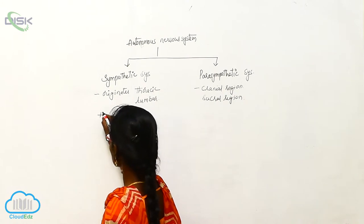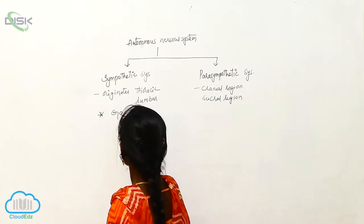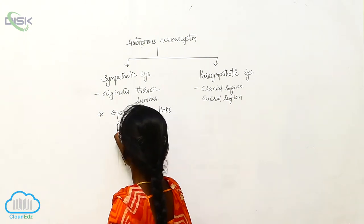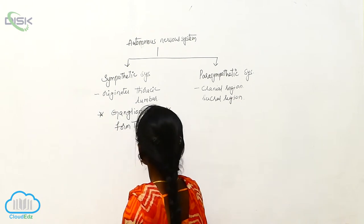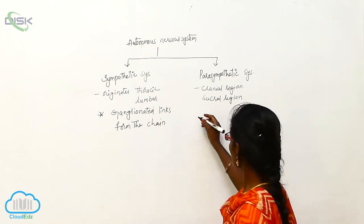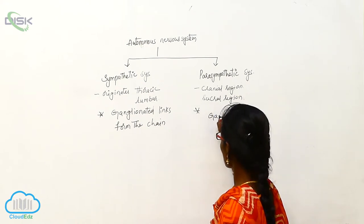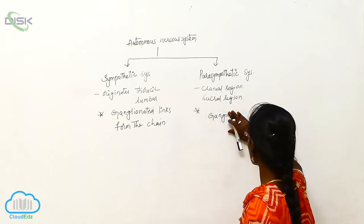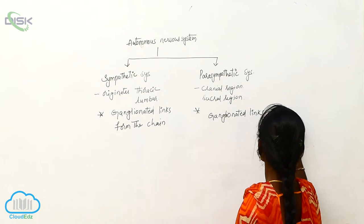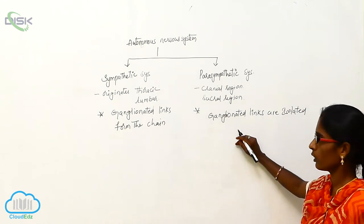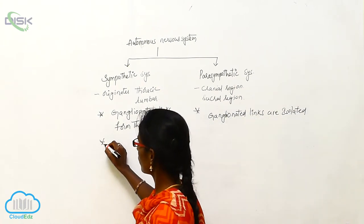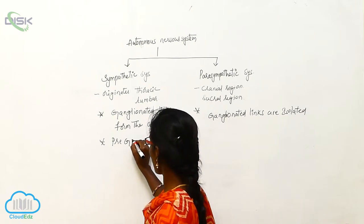In the sympathetic system, the ganglionated links combine together to form a chain. In the parasympathetic system, the ganglionated links are isolated. After the preganglionic fibers...